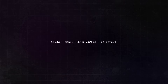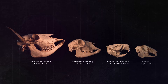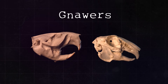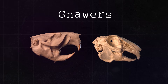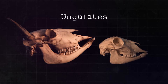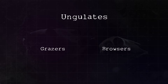Herbivores live off vegetation. Looking at the cranial structures of different herbivores, we can conclude that they can be divided into two groups: the ungulates and the gnawers. Gnawers are rodents, rabbits, and hares, and they feature long, protruding, and continuously growing incisors in the upper and lower jaws. The non-gnawers are the ungulates, or hooved animals.